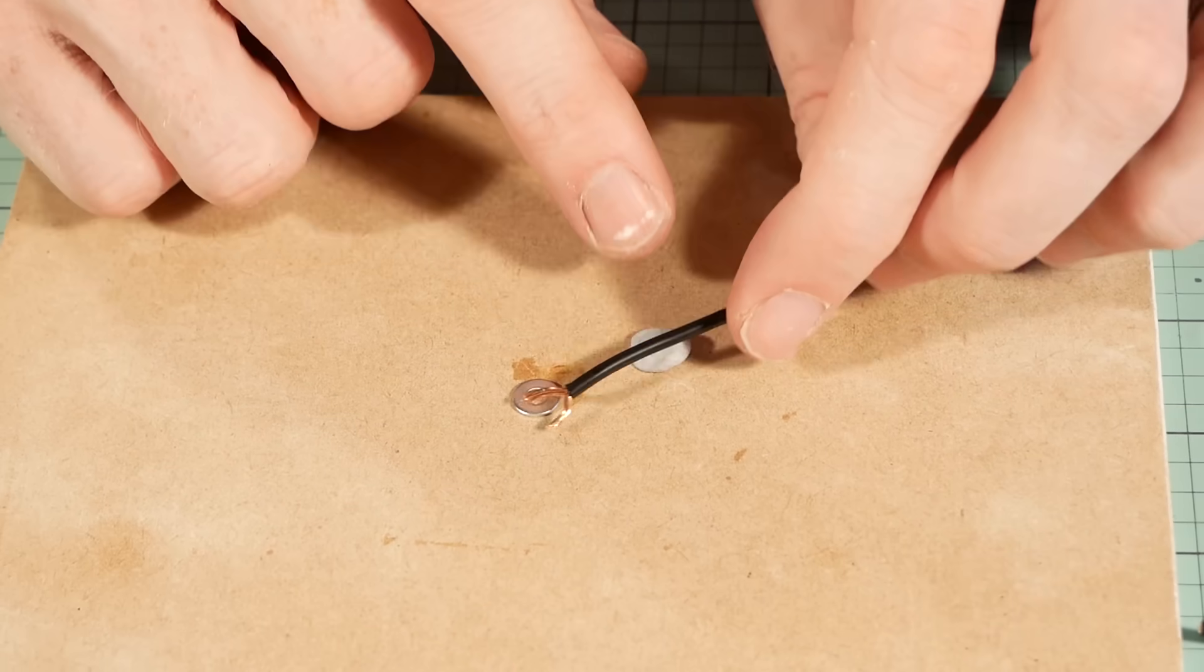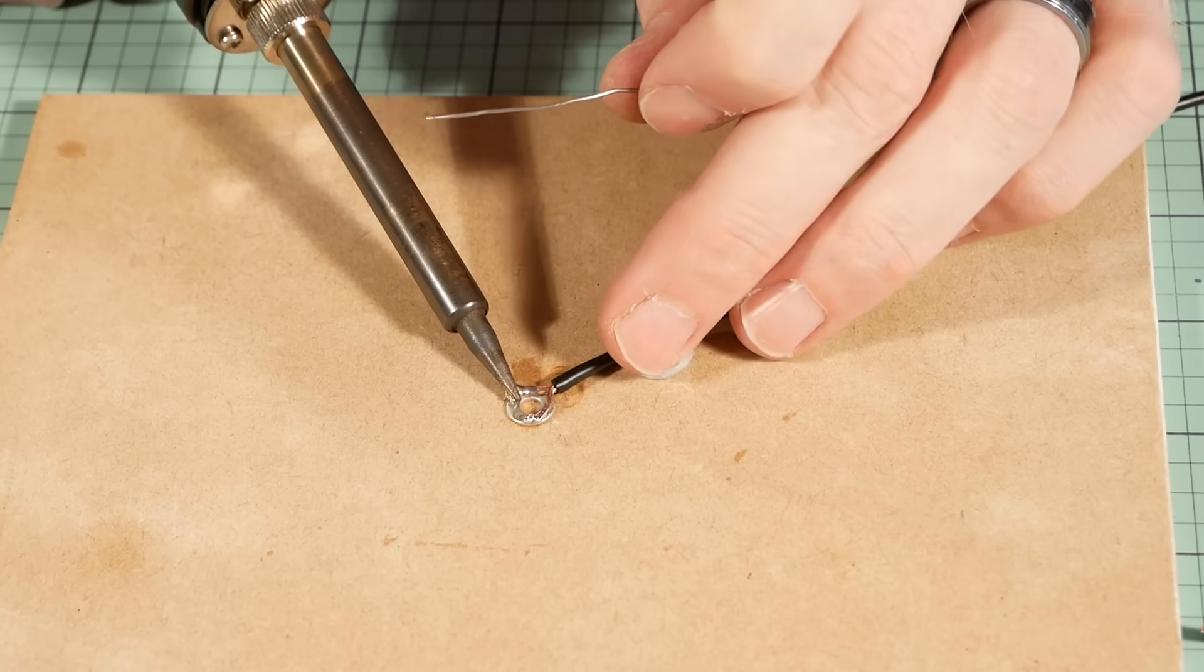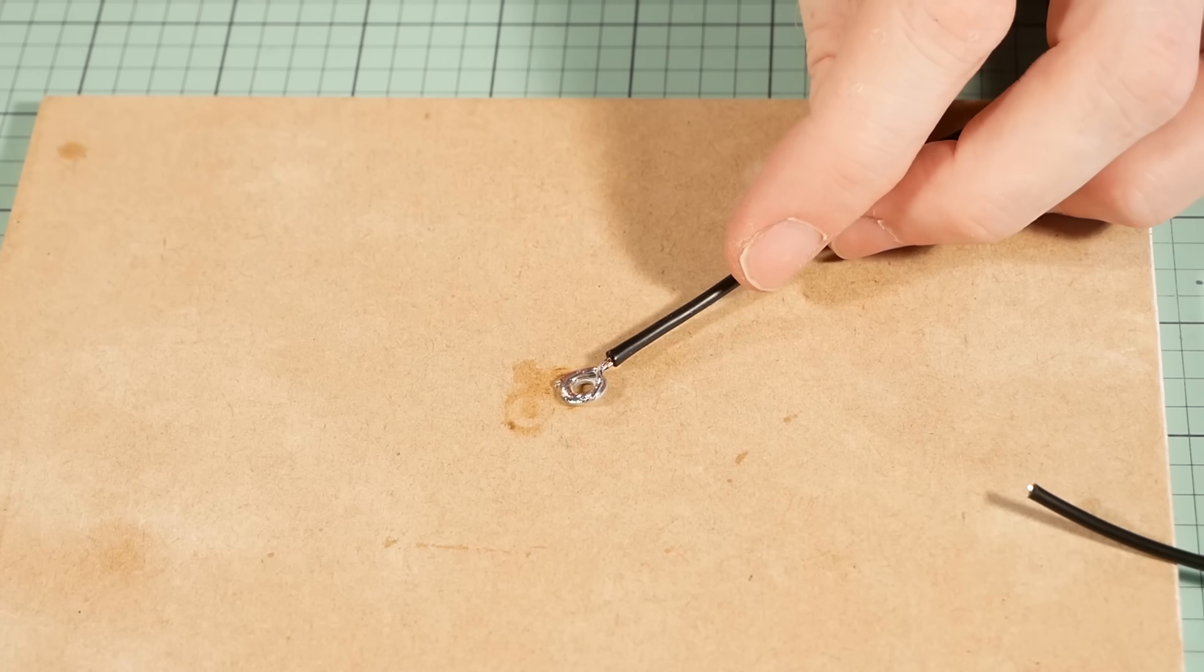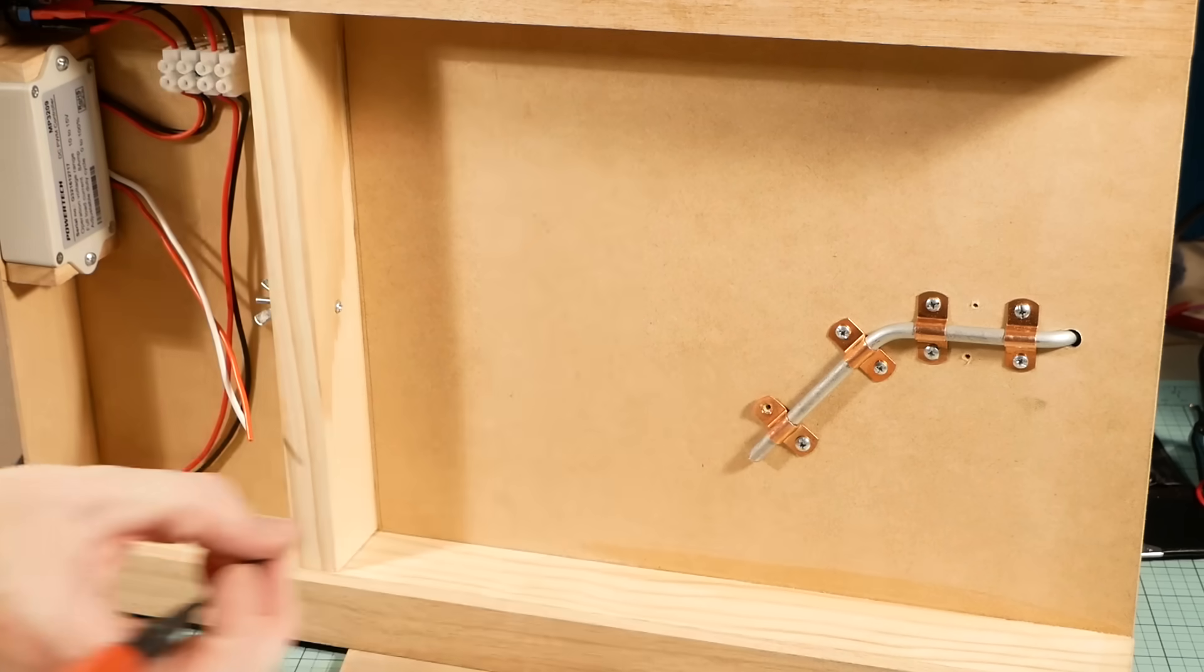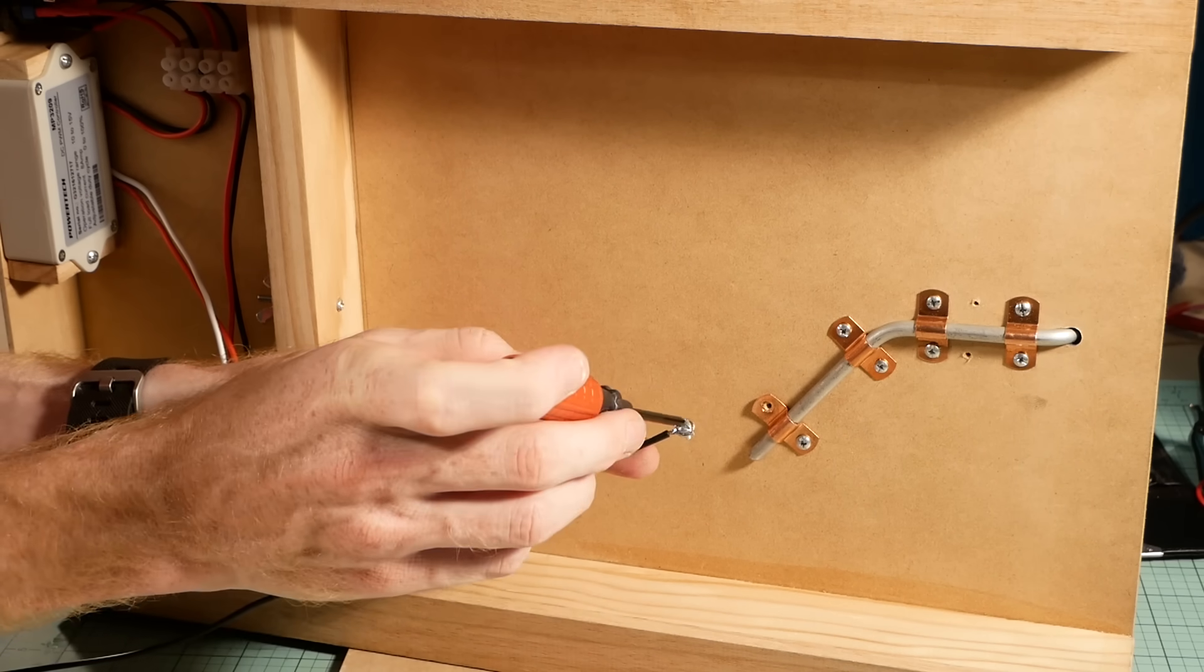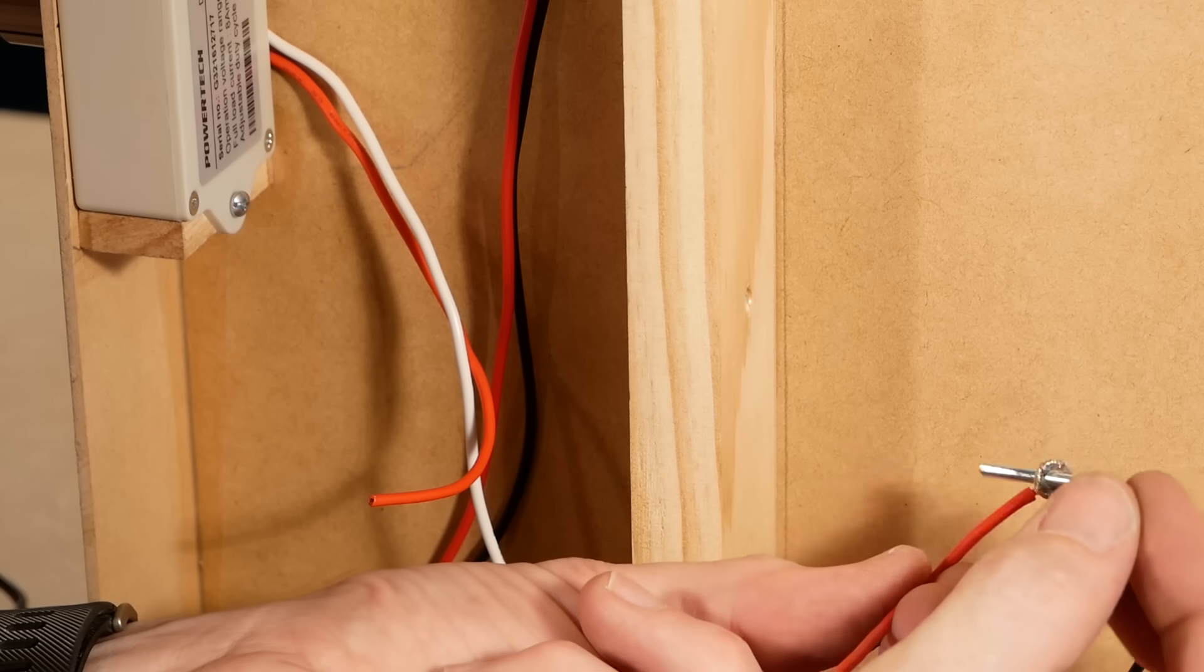One of the output wires from the temperature controller simply connects to the steel rod and the other connects to the bolt and clamp assembly. By soldering the wires to small washers we can easily attach them firstly to the saddle clip and also onto the bolt and clamp assembly, making them easy to attach and remove if required.